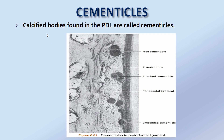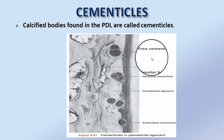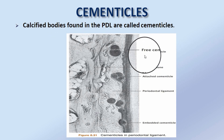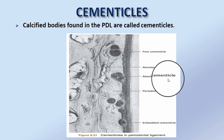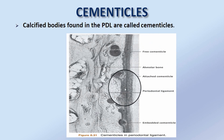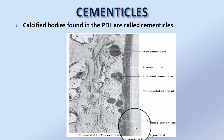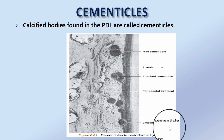Calcified bodies found in the periodontal ligament are called cementicals. There are three types of cementicals: free cementicals, attached cementicals, and embedded cementicals.